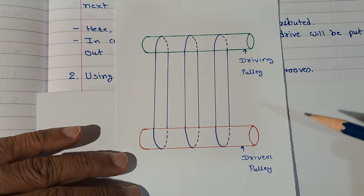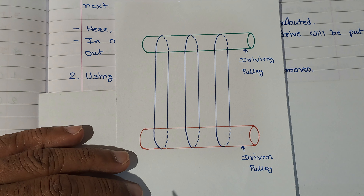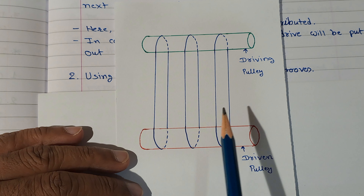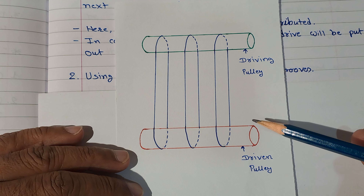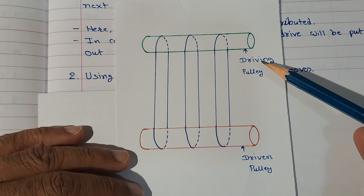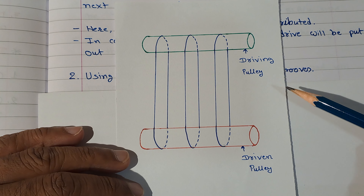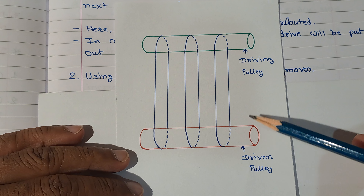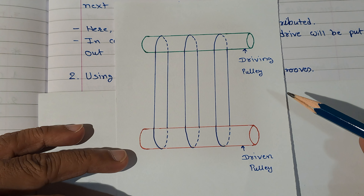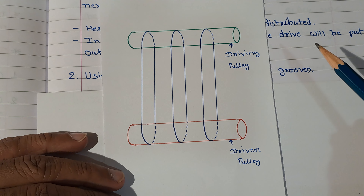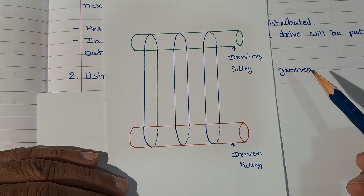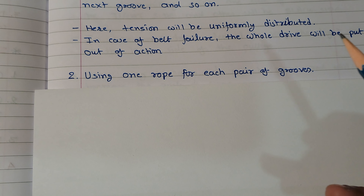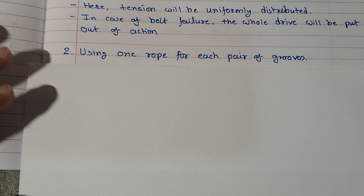At the same time, this arrangement has the advantage that if one rope gets damaged, it will not suddenly put the entire drive out of function — we can continue operating for some time and schedule proper maintenance at a convenient time. This is how rope drives are used for power transmission, either with a single grooved pulley or a multiple grooved pulley. Such multiple grooved pulleys are also used in cranes and in lifts of high-story buildings.